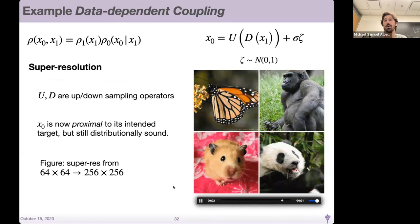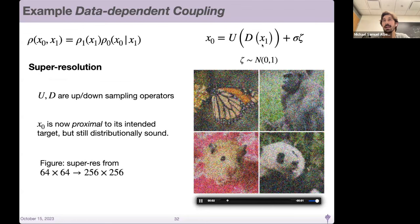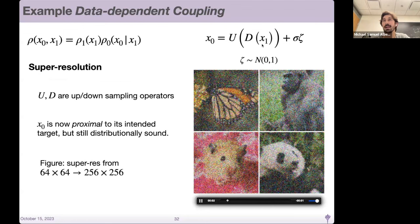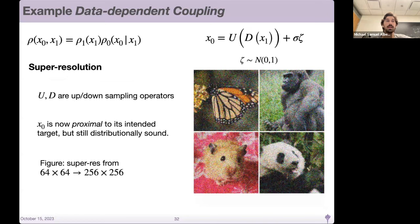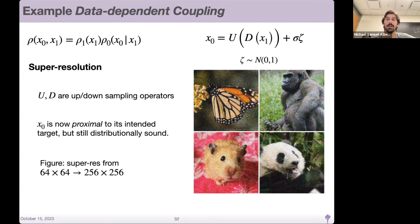Another example is super resolution. You only have 64 by 64 dimensional images. You define a procedure where x0 is conditioned on taking x1, downsampling it, then re-upsampling back to 256 by 256, and convolving with a little noise zeta. This builds a coupling where x0 is very proximal to its intended target — the low-resolution images are baked into the prior — allowing for a more efficient approach to super resolution.